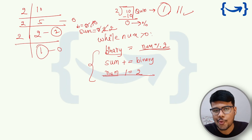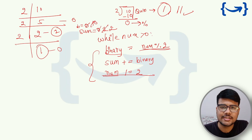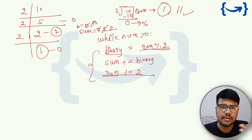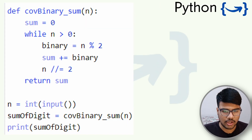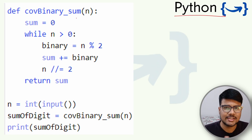The key insight is that they are not asking us to return the binary equivalent itself — they directly ask for the sum of binary digits. So we don't need to store the binary string separately. If they asked for the binary equivalent, we'd traverse and build it first, then sum its digits — but here we can accumulate the sum directly during conversion.